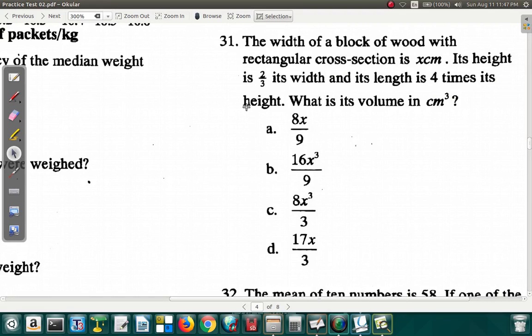Let's look at question 31. The width of a block of wood with rectangular cross-section is x centimeter. The height is two-thirds its width and the length is four times its height. What is the volume? Alright, let's see what this is all about. It's a block of wood.